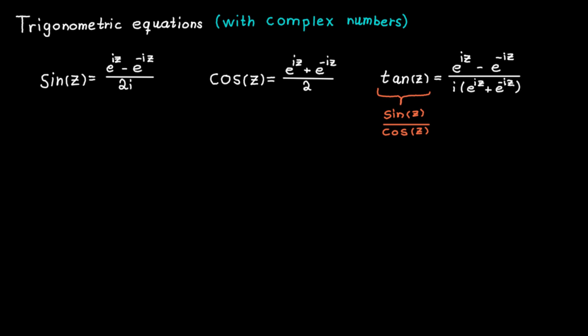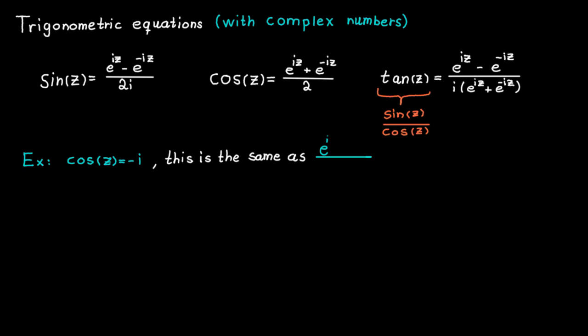Let's say we want to solve the trigonometric equation where cosine is equal to minus i. First, we use the definition of cosine to rewrite the whole equation. This is actually a quadratic equation, but kind of in disguise — we can see it more clearly if we rewrite the expression a bit.